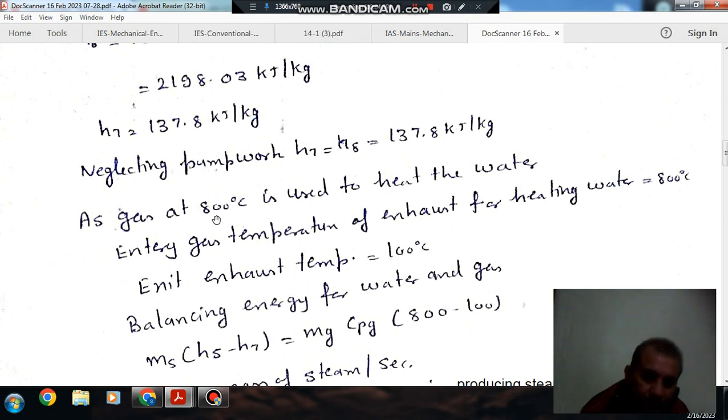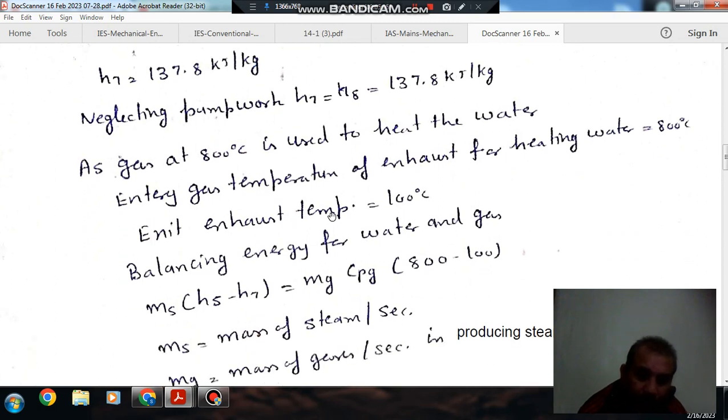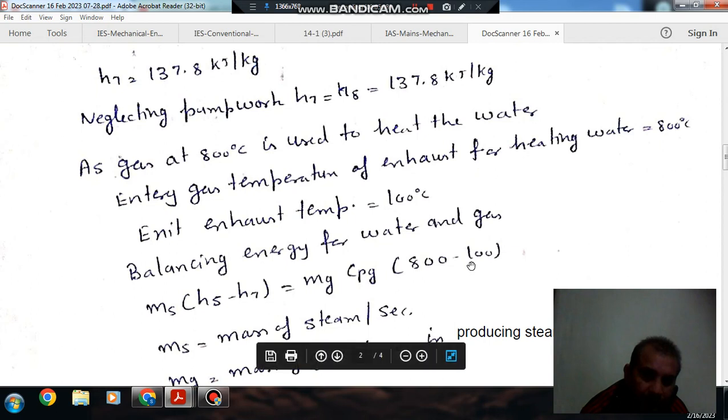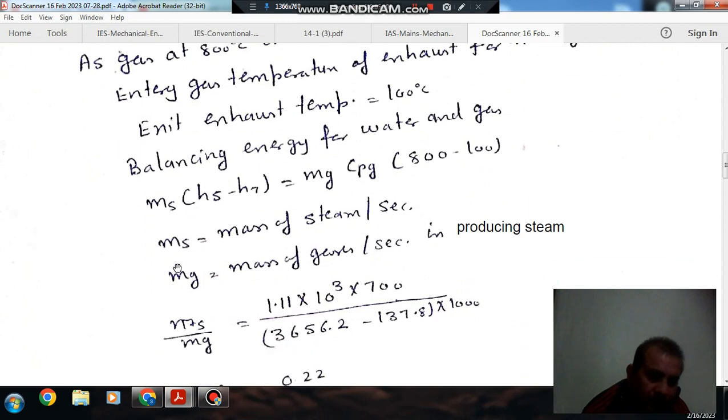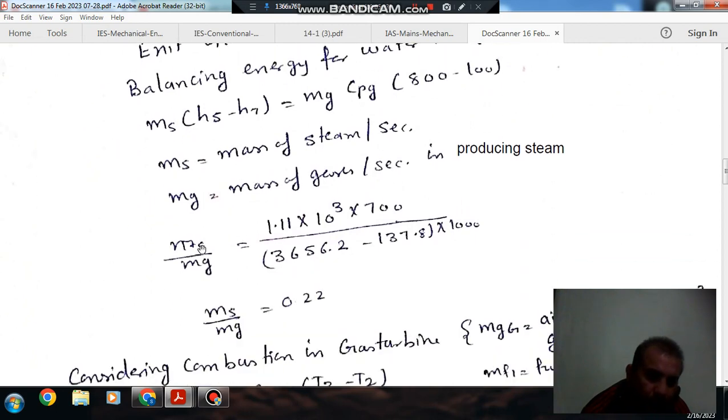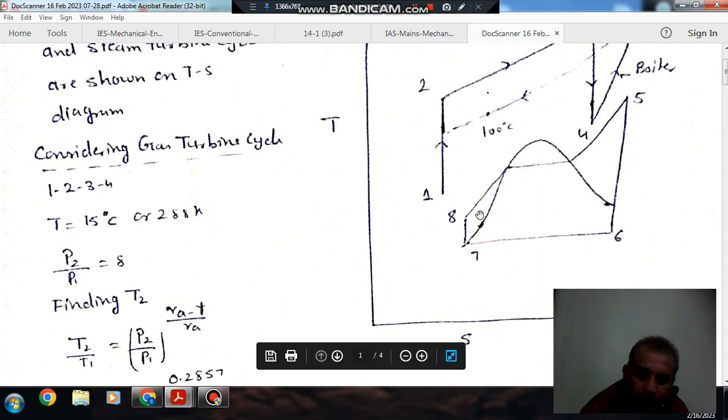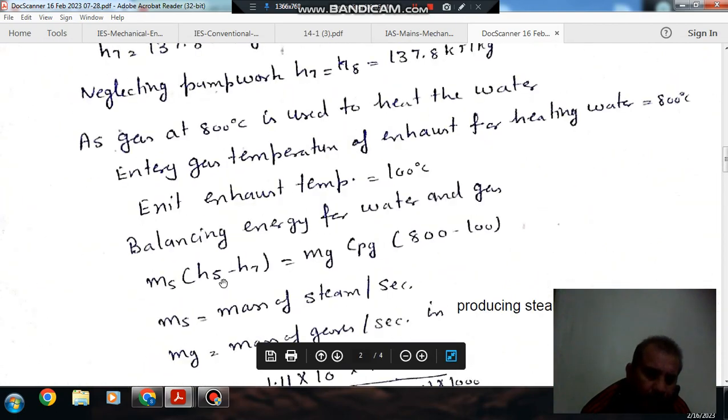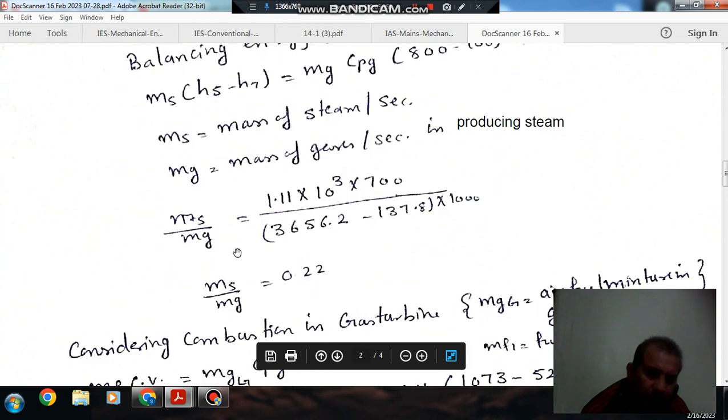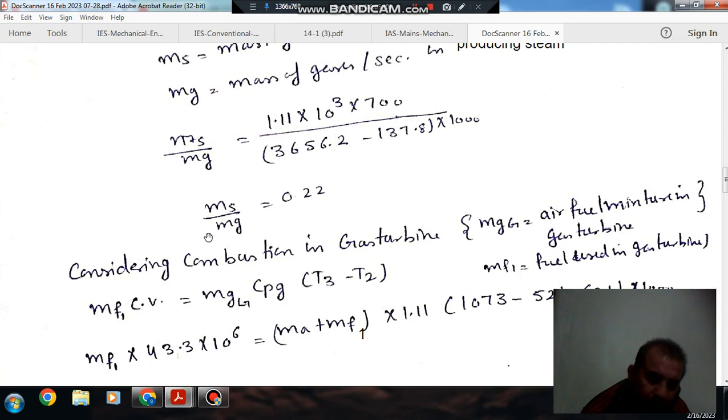So now the gases at 800°C is used to heat water. And it leaves the boiler at 100°C. So changing temperature of gases is 800 minus 100 = 700 K. And suppose Mg is the mass of the gases that is used to heat the water. And Ms is the mass of the steam. So by equating heat, because heat supplied by gas equals heat absorbed by steam from 5 to 8, we can find out by putting the values Ms/Mg. So that comes to 0.22.